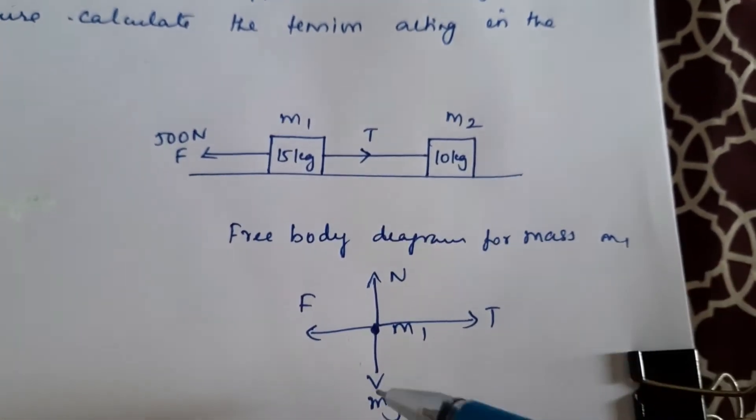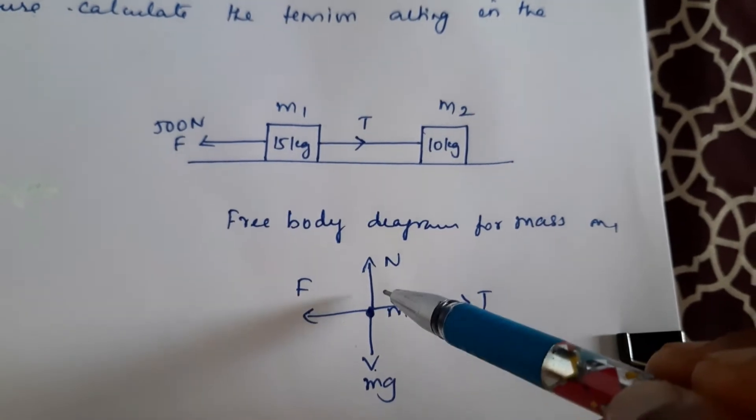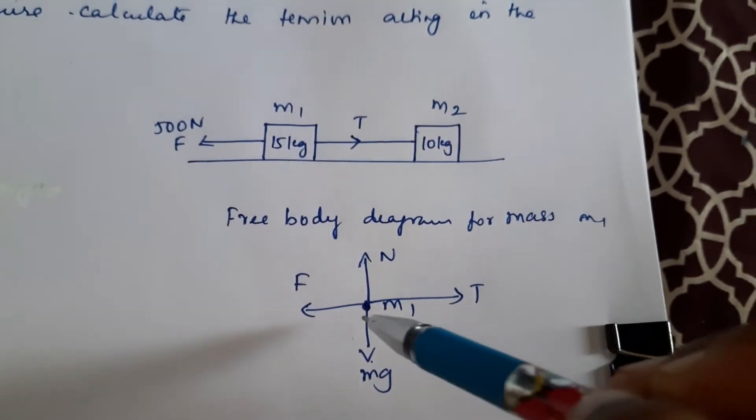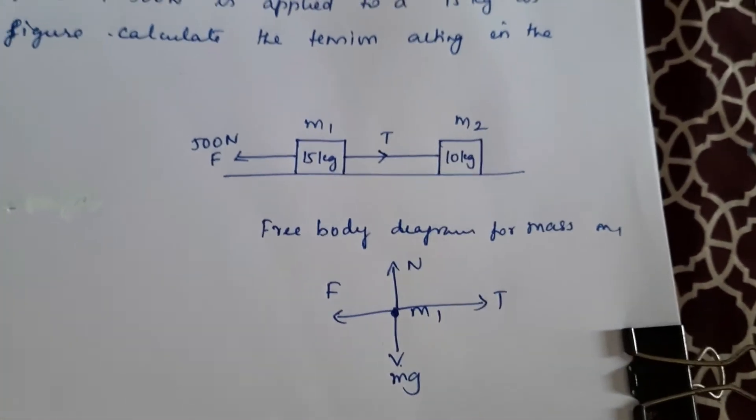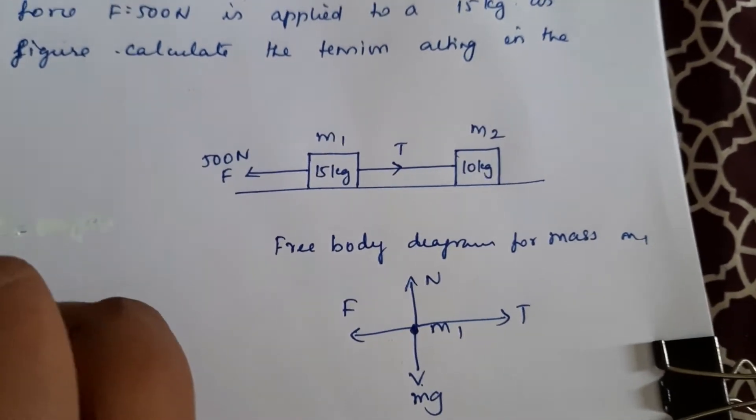For mass m1, the downward force is mg and the upward force is N. In this direction the force is F, and in this direction the tension is T. Now we can write the equation: F minus T equals ma.